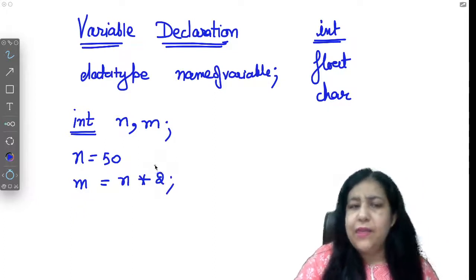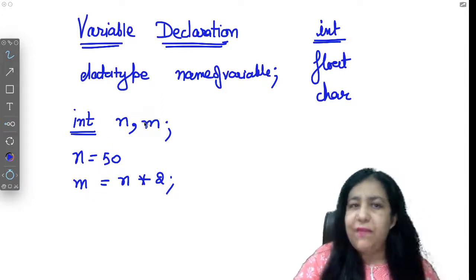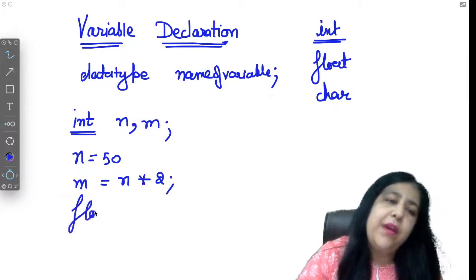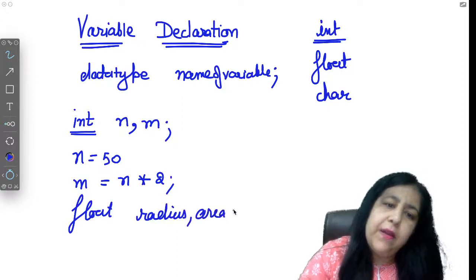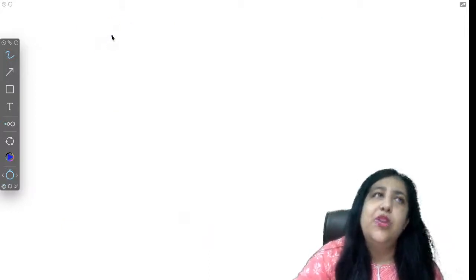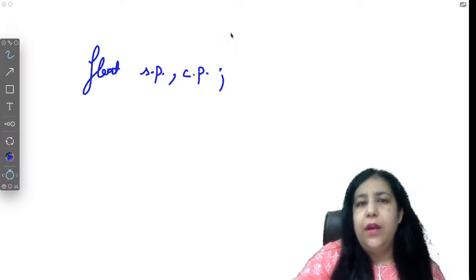We should give meaningful names in programs. Like if you're making a program for a circle, you should write float radius, area. Sounds good, meaningful names. But suppose you're making a program for a shop where you need to take selling price and cost price of a product, and you write it like this. Then C will give you an error.